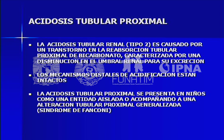La acidosis proximal, que es la tipo 2, descubierta en el año 67 y descrita por Rodríguez, Soriano y Edelman, es un trastorno en la reabsorción tubular proximal de bicarbonato producido por una disminución del umbral renal. Así como existe un umbral renal para la glucosa que cuando la glucemia sube de 180 mg el riñón empieza a perder glucosa, pasa lo mismo con el bicarbonato. En prematuros el umbral es de 18, en recién nacidos de 20, en lactantes de 22-23, en niños más grandes de 24. Arriba de esos valores, el riñón empieza a perder bicarbonato.